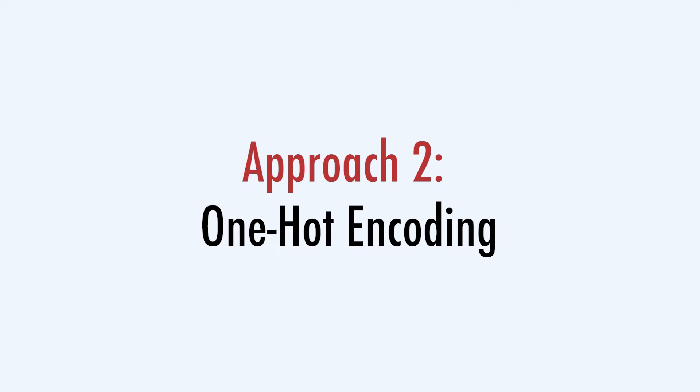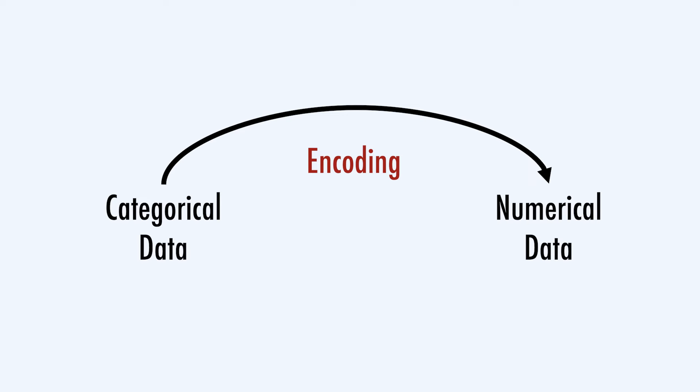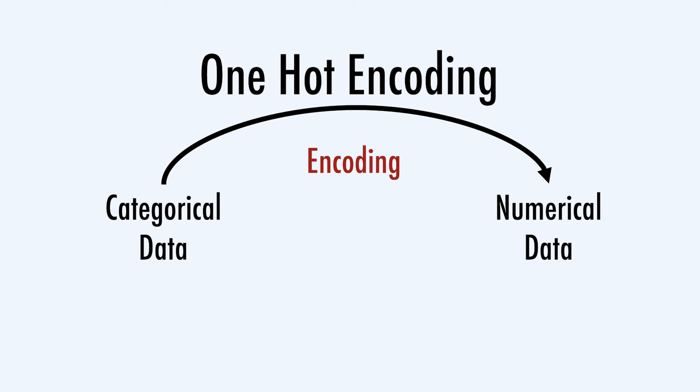Maybe with categorical data we can have better luck. A second approach to deal with categorical data is to encode the categorical data before we do the clustering. The idea is to transform our categorical features into numerical features even before we proceed to cluster the data. We can try to encode the categorical data using different methods, but a famous one is the scheme of one-hot encoding. Maybe you've already heard about the term one-hot encoding — or maybe not. But anyway, what is one-hot encoding and why and how do we use it?